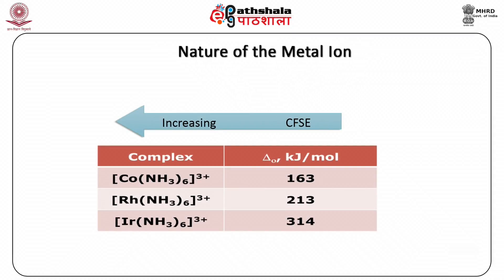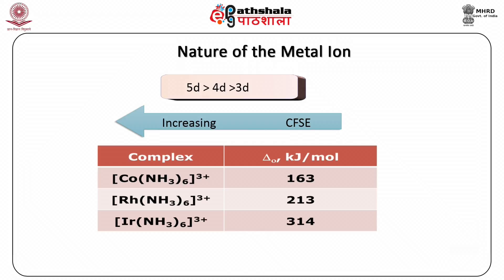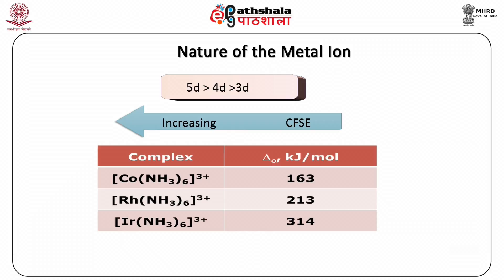If we consider metal ions that belong to the same group forming similar complexes with the same oxidation state, we find that metal ions belonging to the 5D series have greater CFSE values compared to those of the 4D series. Considering the 3D series, the CFSE further decreases by 30 to 40% compared to the 4D series. This effect is attributed to the size and spatial arrangement of the orbitals. The series shown on the slide describes decreasing CFSE down the group, and CFSE values for representative metal ions are shown in the table.